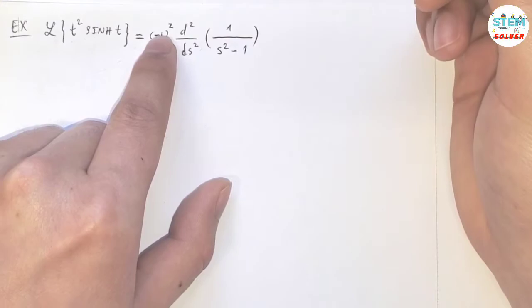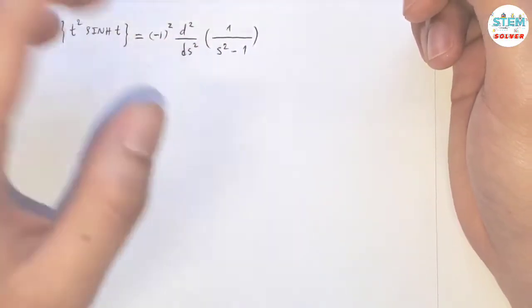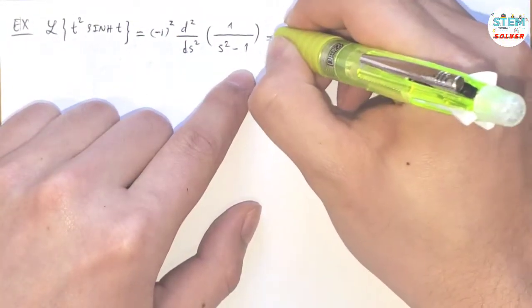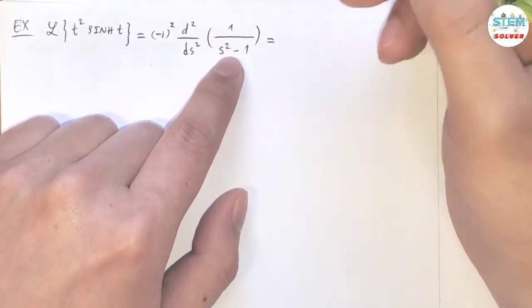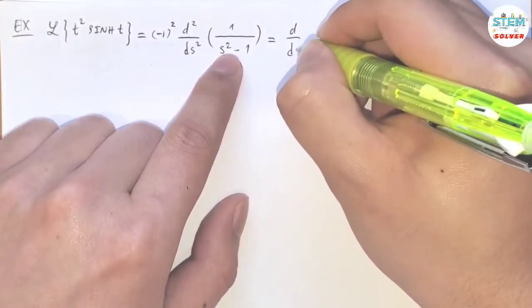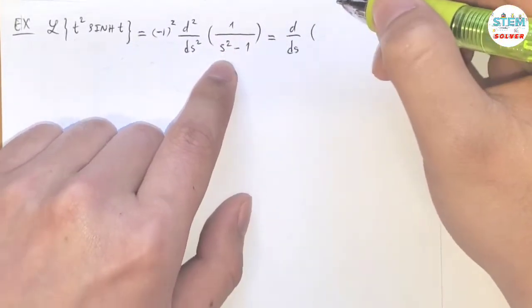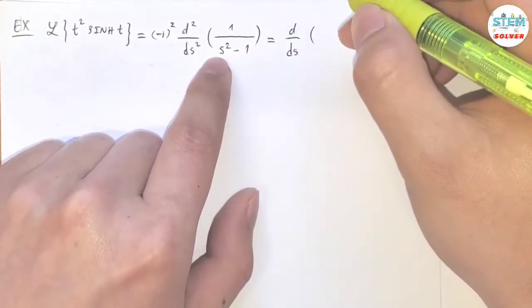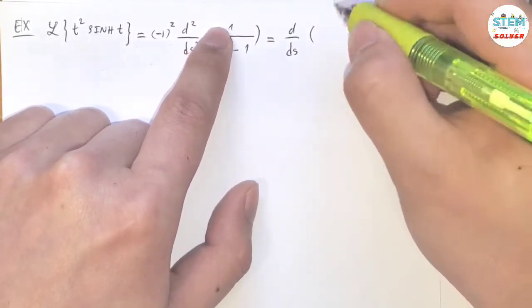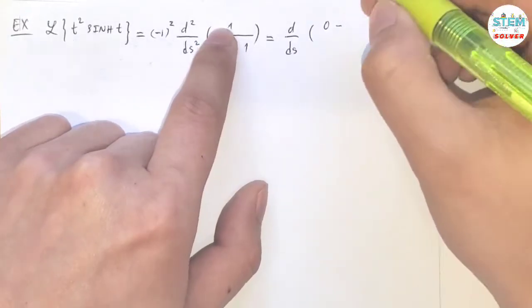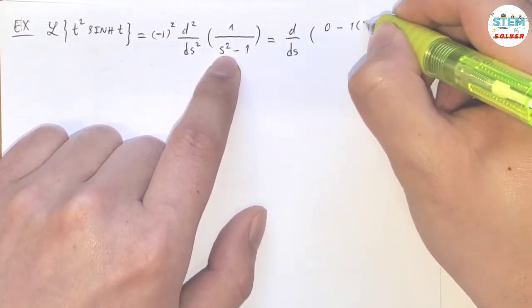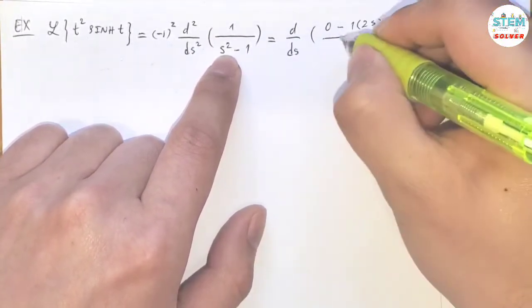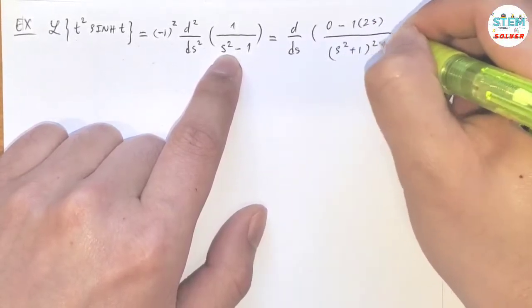So now back to this one. We have negative 1 squared and that gives me 1, so just get rid of it. Now take the derivative of this twice. Taking the first derivative gives me low d high, so bottom times the derivative of top which is 0, minus the top times the derivative of the bottom which is 2s, divided by the bottom squared.